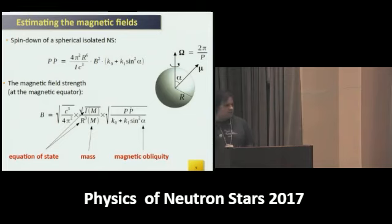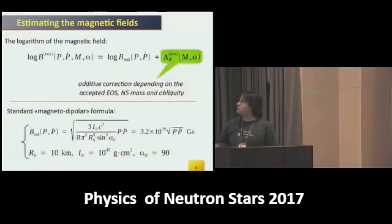But there are some tricks that can help solve this problem. First, it's convenient to deal with the logarithm of the magnetic field. In that case, this formula can be rewritten as a sum of two terms. The first is the classical, standard, well-known, widely used magnetic dipole estimator for pulsar magnetic fields.